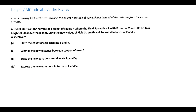A different type of question — another key thing to look out for is the distinction between altitude and orbit radius. Altitude tells you how far something is from the surface of the planet, not from the centre of mass, so it's important to factor that in.